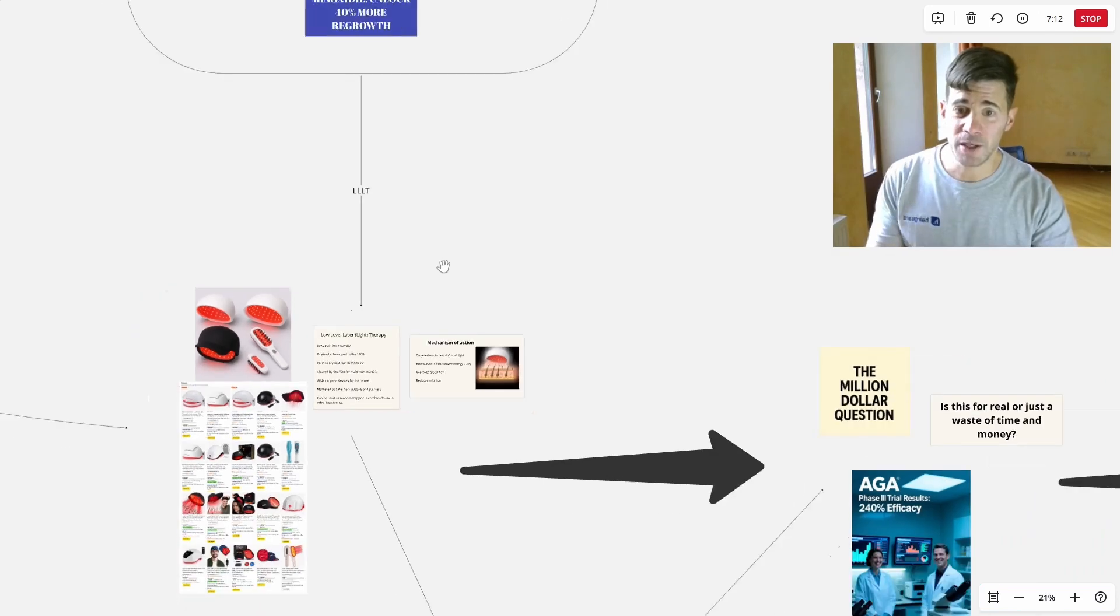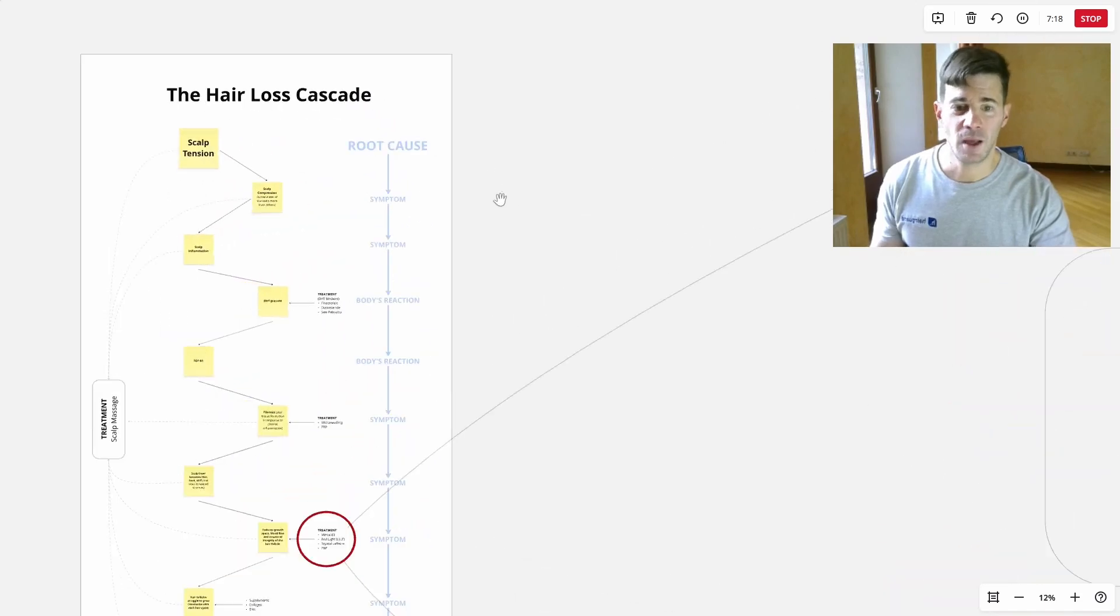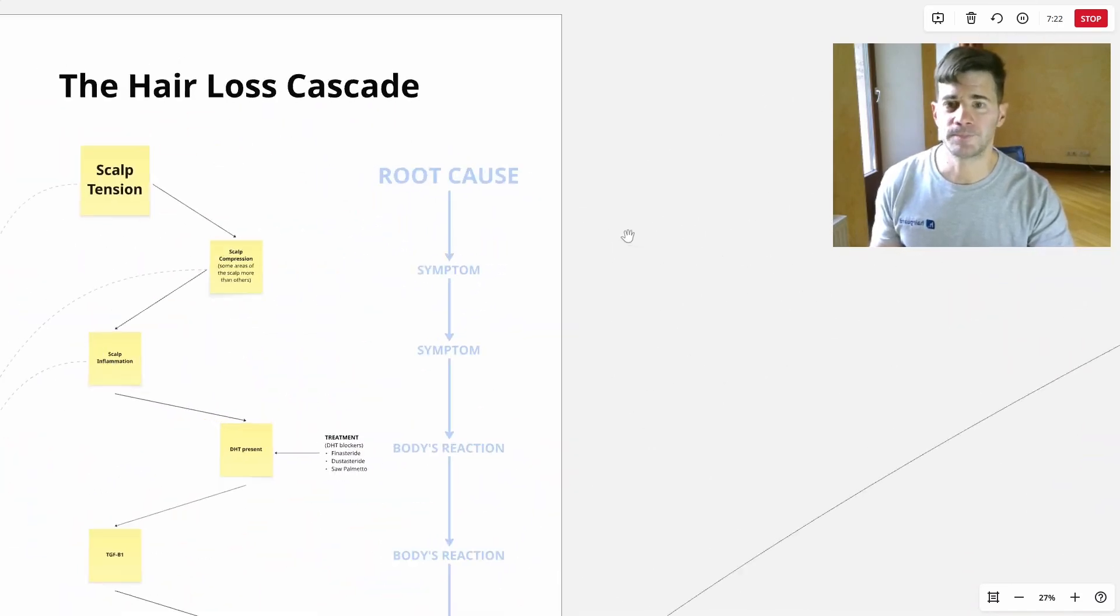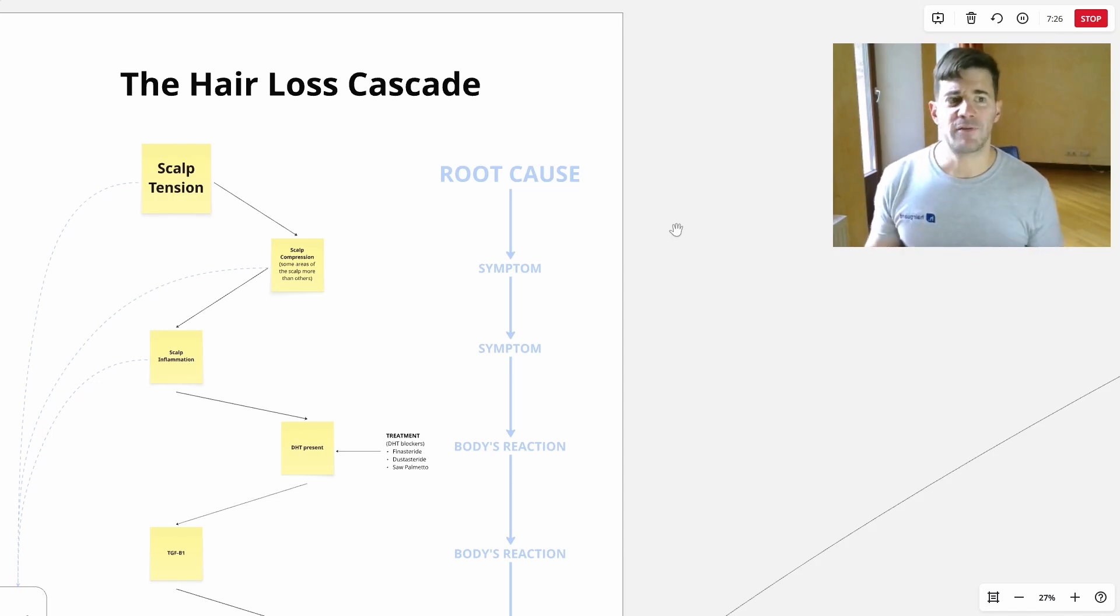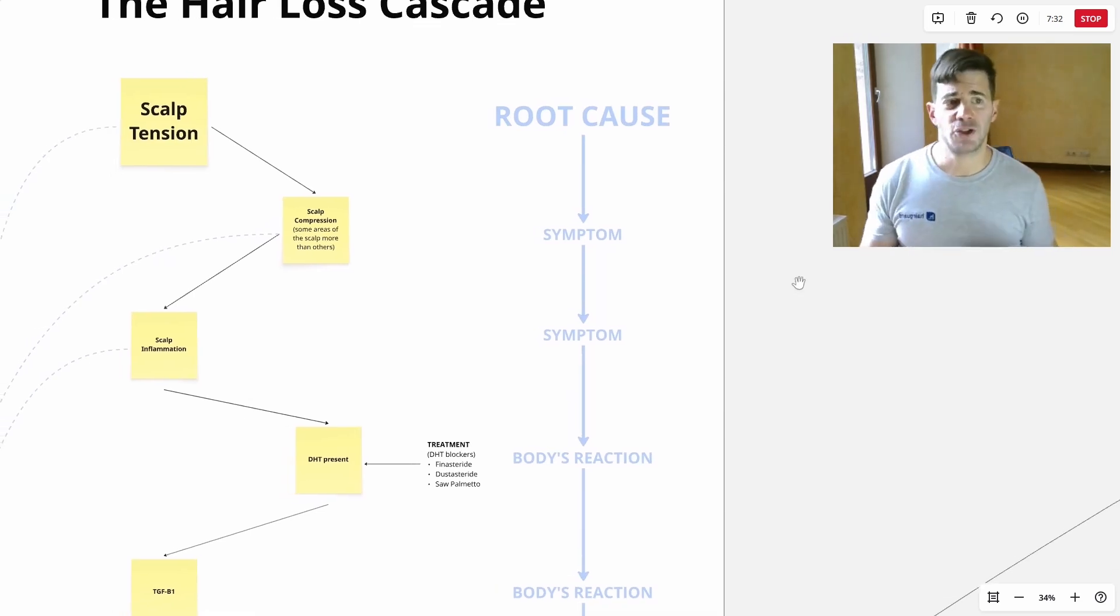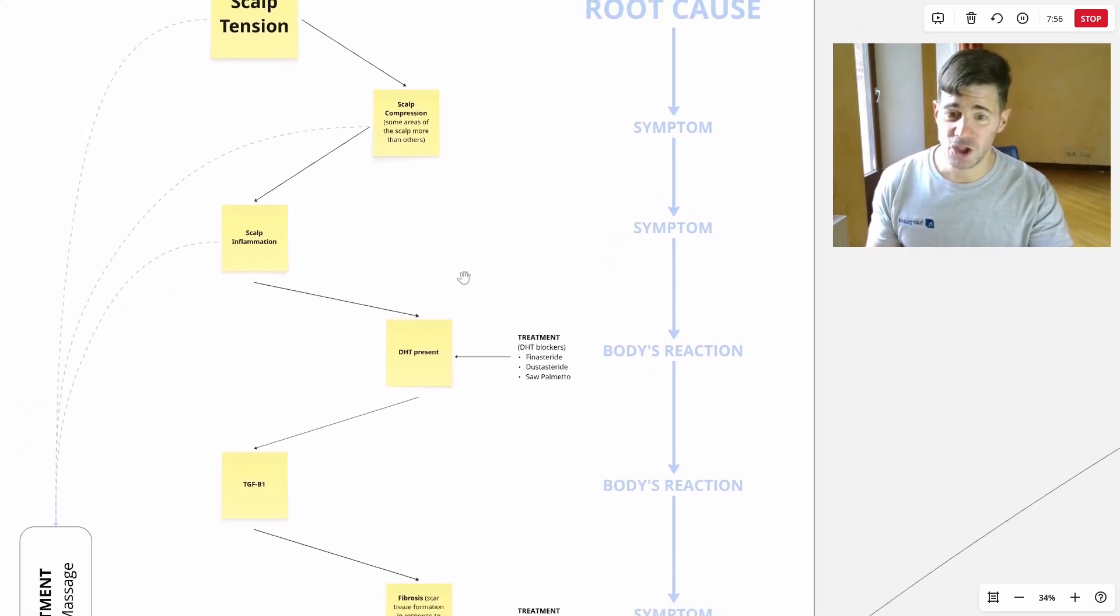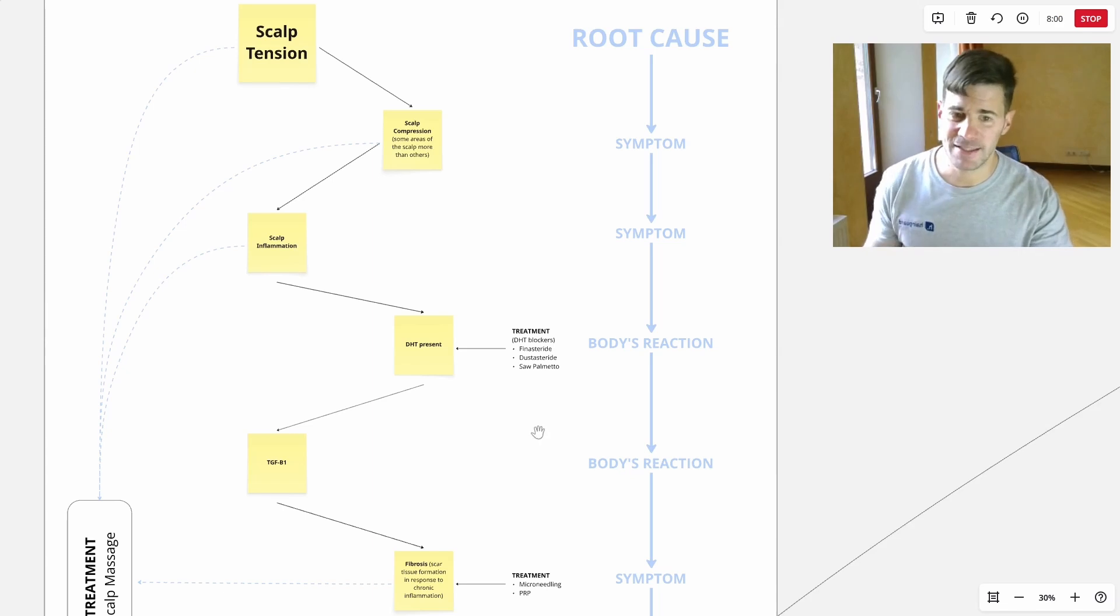Before we continue, I just want to place both of these treatments, LLLT and Minoxidil, in the broader hair loss cascade. At the root, at the base of the hair loss cascade, we have scalp tension—chronic scalp tension. And this scalp tension affects certain parts of the scalp more than others. The ones that it affects the most are the temples, the crown area, and then the top of the head. And of course, the whole frontal area. These are the parts of the head that go bald faster, especially the temples and the crown. This chronic scalp compression, this chronic scalp tension triggers inflammation.